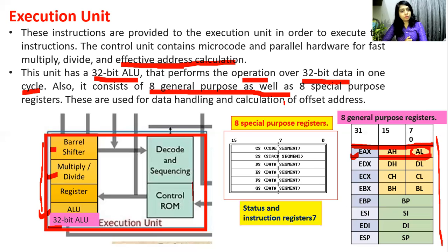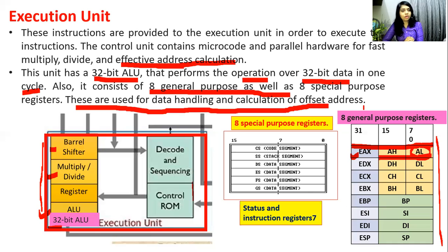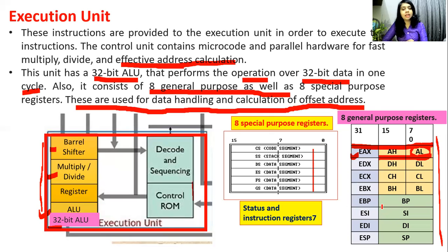There are also 8 special purpose registers, including code segment, stack segment, and different data segment registers, as well as status and instruction registers. These are used for data handling, storing temporary data, and for calculation of offset addresses and physical addresses.